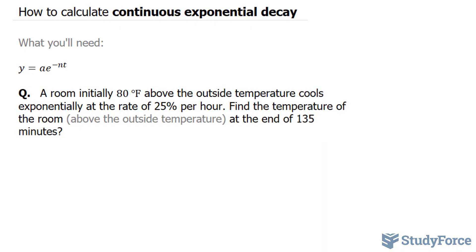a represents your initial amount, n represents the rate, and t represents the time.